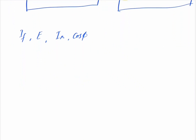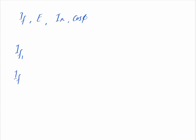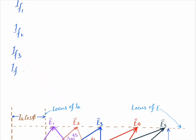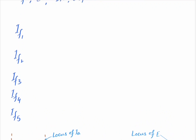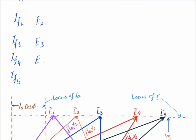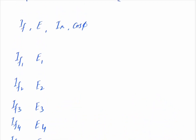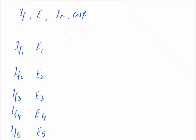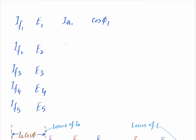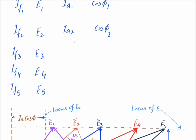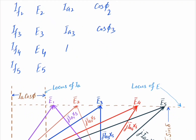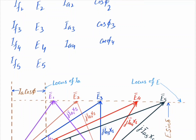Let us take five different values of excitation: If1, If2, If3, If4, and If5. The corresponding excitation EMFs will be E1, E2, E3, E4, E5. The armature current corresponding to If1 is Ia1 with power factor angle φ1; for If2, armature current is Ia2 with angle φ2; for If3, armature current is Ia3 with angle φ3; for If4, armature current is Ia4 with angle φ4; and for If5, armature current is Ia5 with angle φ5.